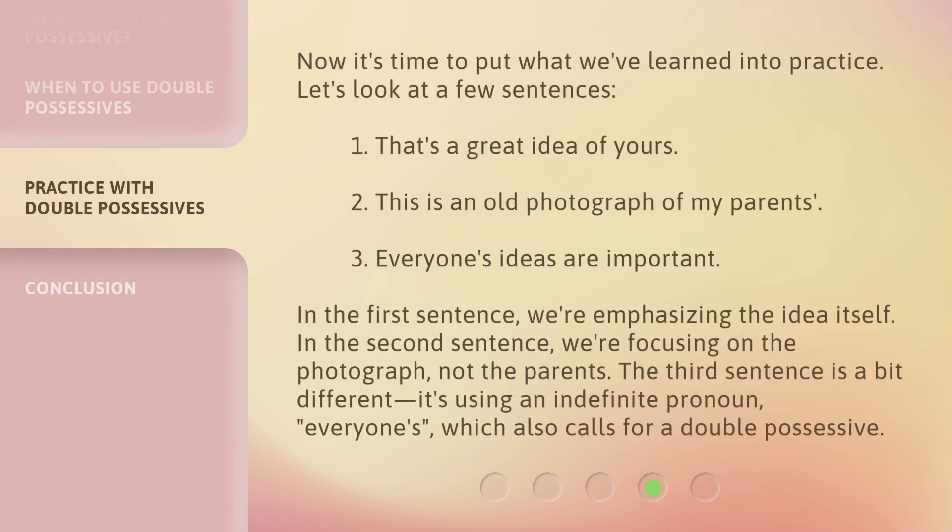Now it's time to put what we've learned into practice. Let's look at a few sentences. One: 'That's a great idea of yours.' Two: 'This is an old photograph of my parents.' Three: 'Everyone's ideas are important.' In the first sentence, we're emphasizing the idea itself. In the second sentence, we're focusing on the photograph, not the parents. The third sentence uses an indefinite pronoun, 'everyone's,' which also calls for a double possessive.